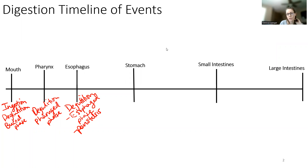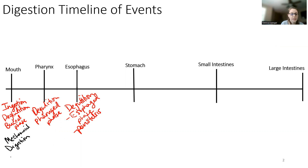So where are we? The next part we're going to do is looking at the stomach. I realized from the mouth part, I forgot one thing: the mouth does ingestion and deglutition. It also does mechanical digestion and chemical digestion — remember, of carbs.